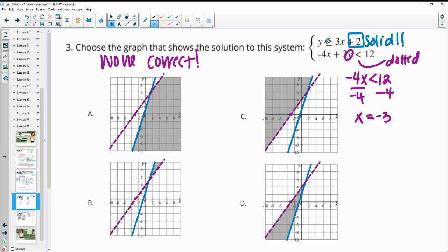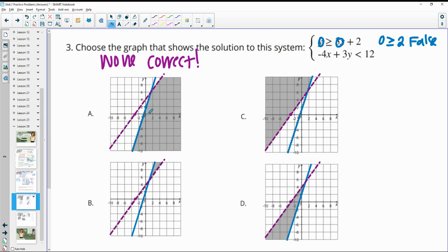So let's plug in 0, 0 to see if it's a solution to this blue one. So we'd have 0 is greater than 2 if we did that. And that is false. So we do not want 0, 0 in our solution. So we need to be shaded above this blue line. So this one's bad because you have shading below the blue line. This one has shading below the blue line. So that's bad. So both of these ones are fine because our shading is above the blue.